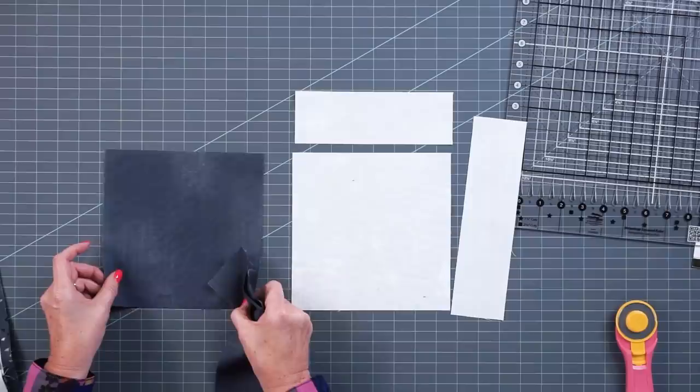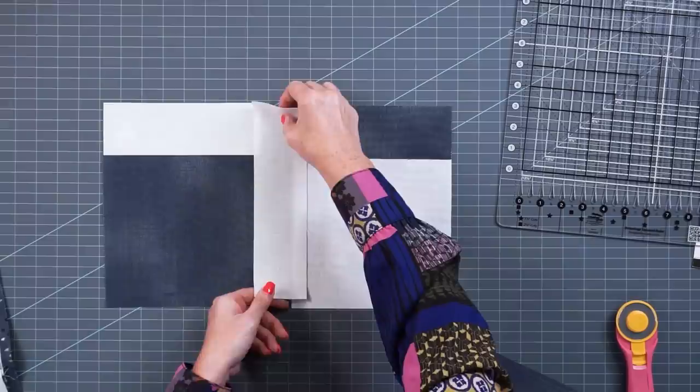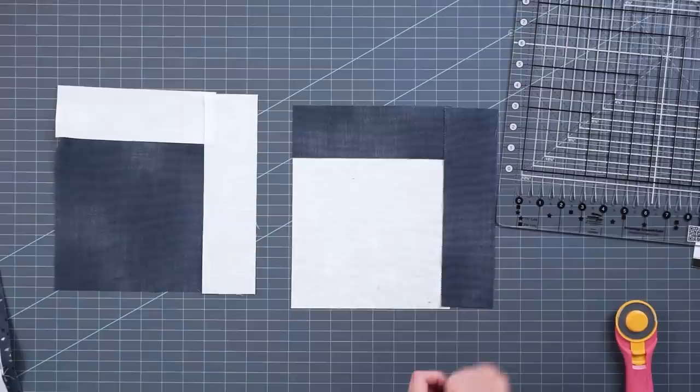Now all we're going to do is take the squares and sew a light rectangle to the dark one and vice versa, and then we're going to sew the light long rectangle to the side and vice versa.